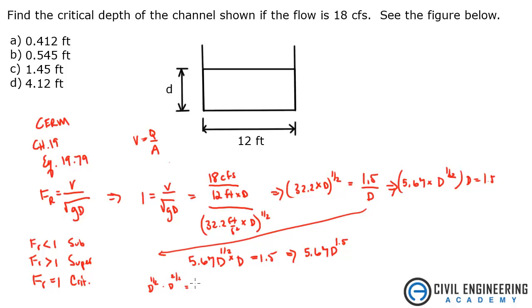So that's how I got that. And that's equal to 1.5. Divide 5.67 to the other side and you're going to get D to the 1.5.